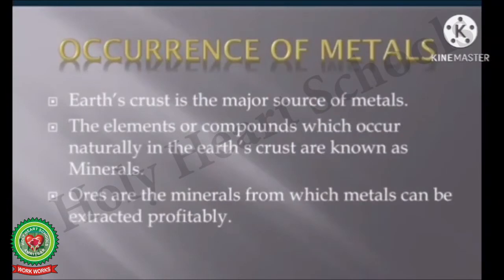Occurrence of metals: Earth's crust is the major source of metals. The elements or compounds which occur naturally in the earth's crust are known as minerals. Ores are the minerals from which metals can be extracted profitably.